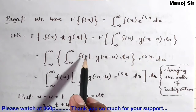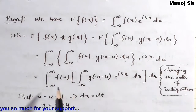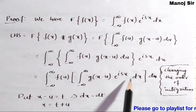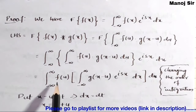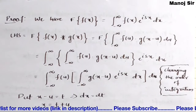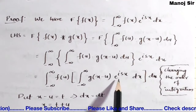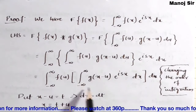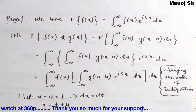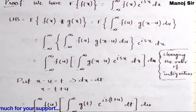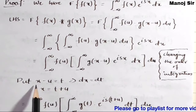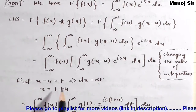Since we are integrating with respect to x first, f(u) is constant and can be taken outside the inner integral. So this becomes: integration from minus infinity to plus infinity of f(u) into integration from minus infinity to plus infinity of g(x minus u) e to the power isx dx, du. Now we put x minus u equals t, so dx equals dt, and x equals t plus u.